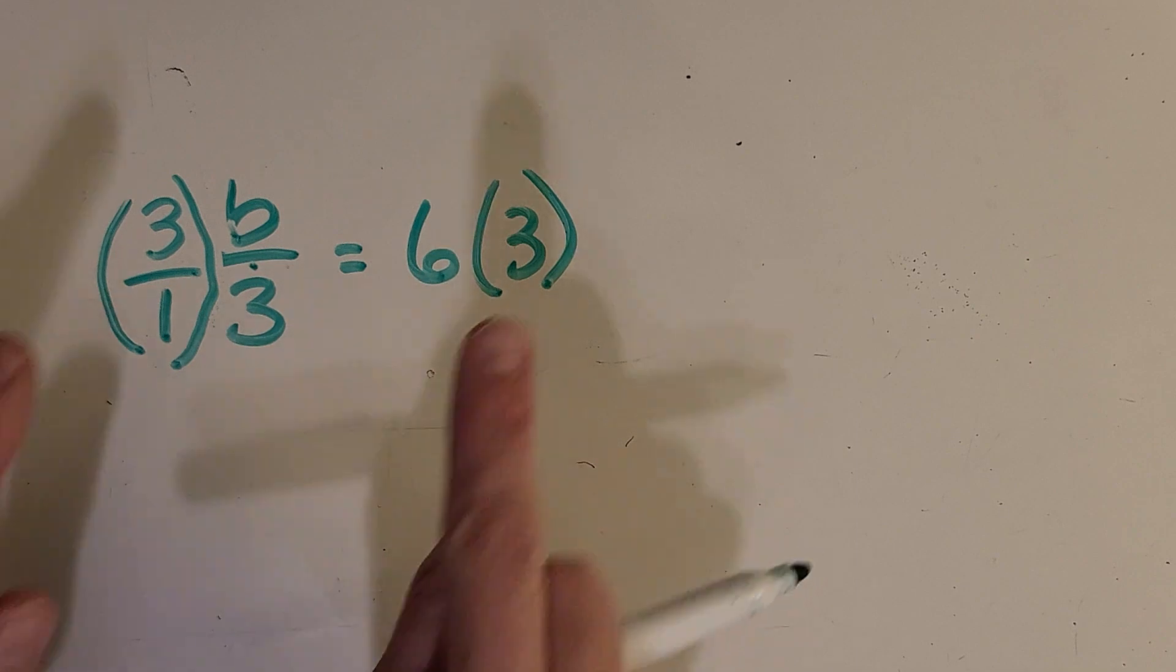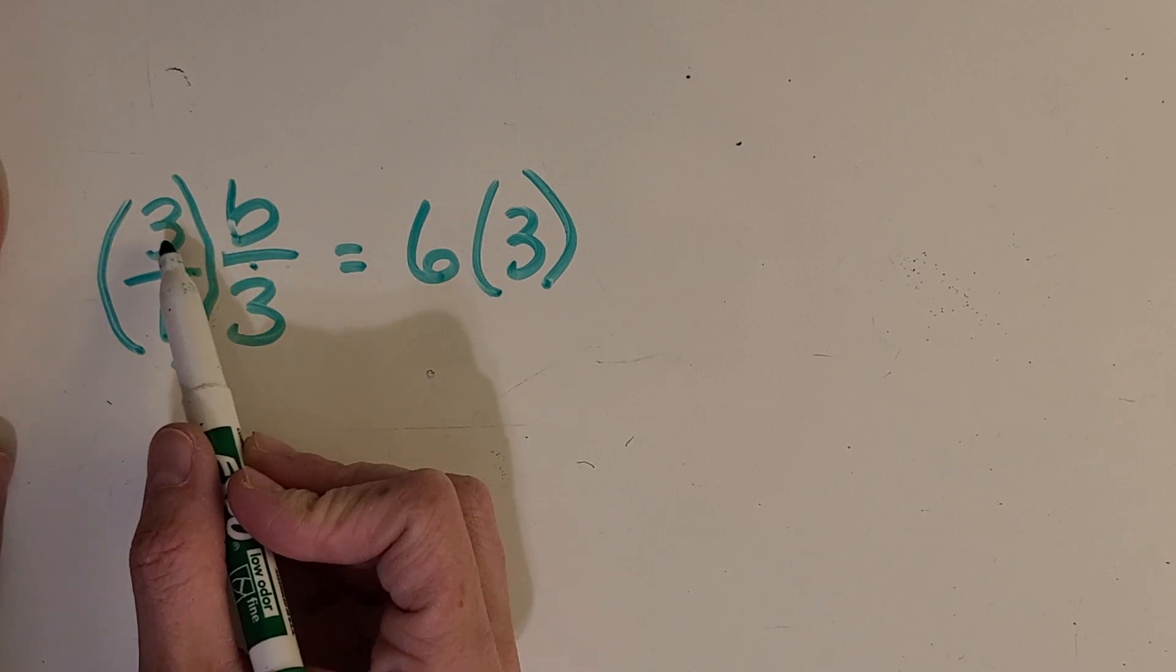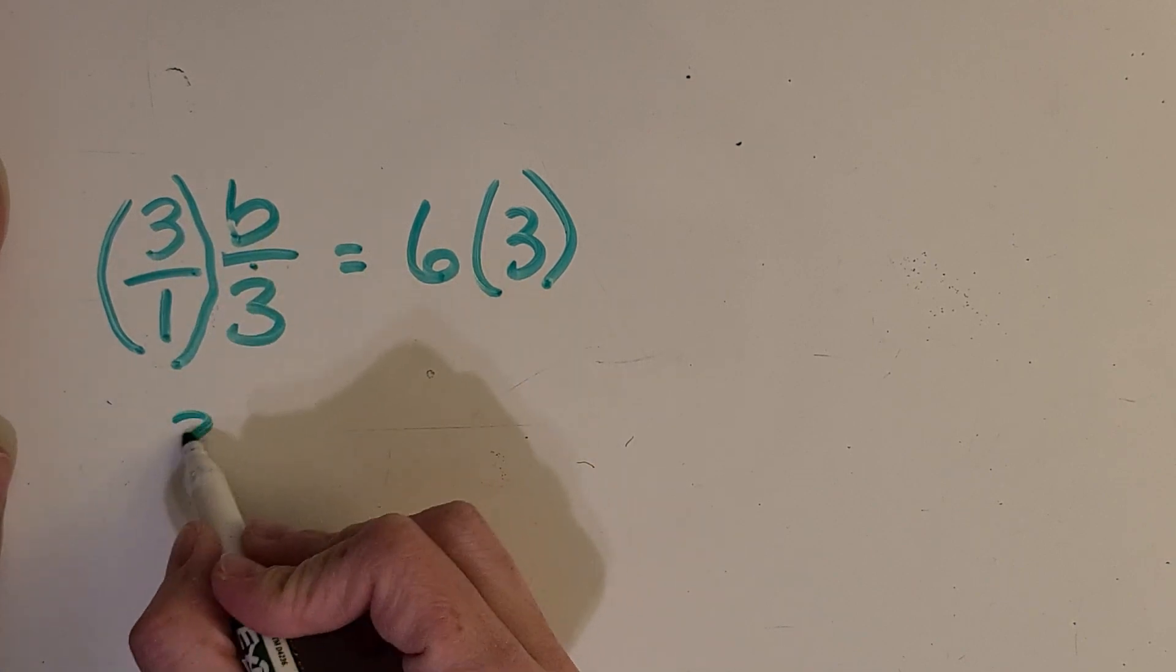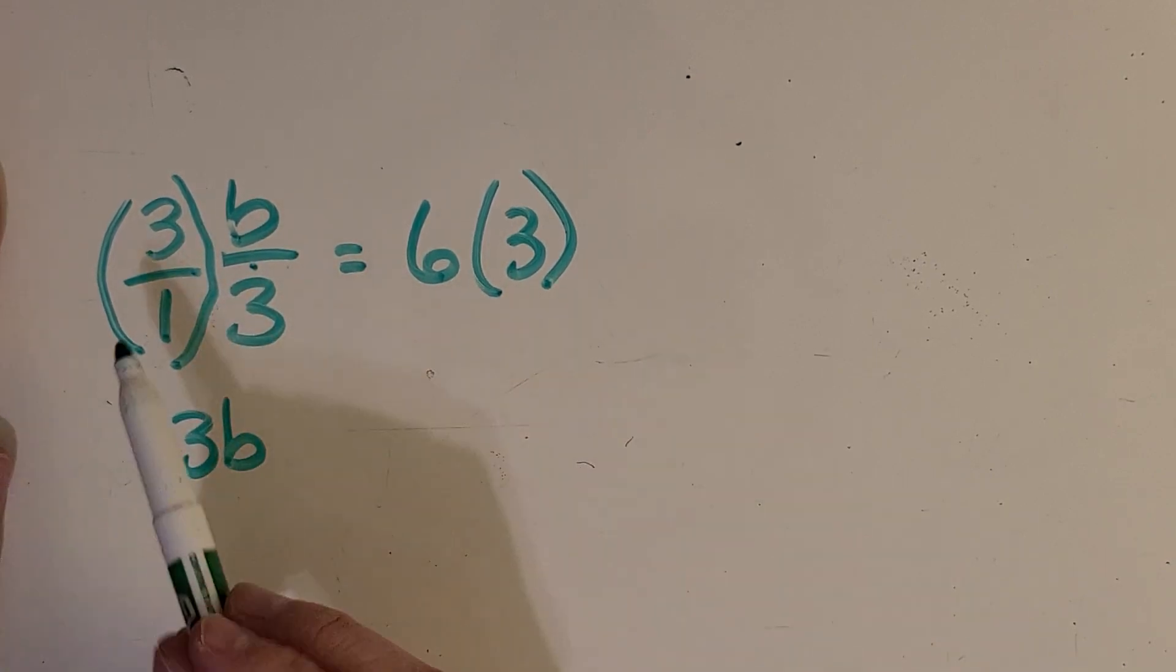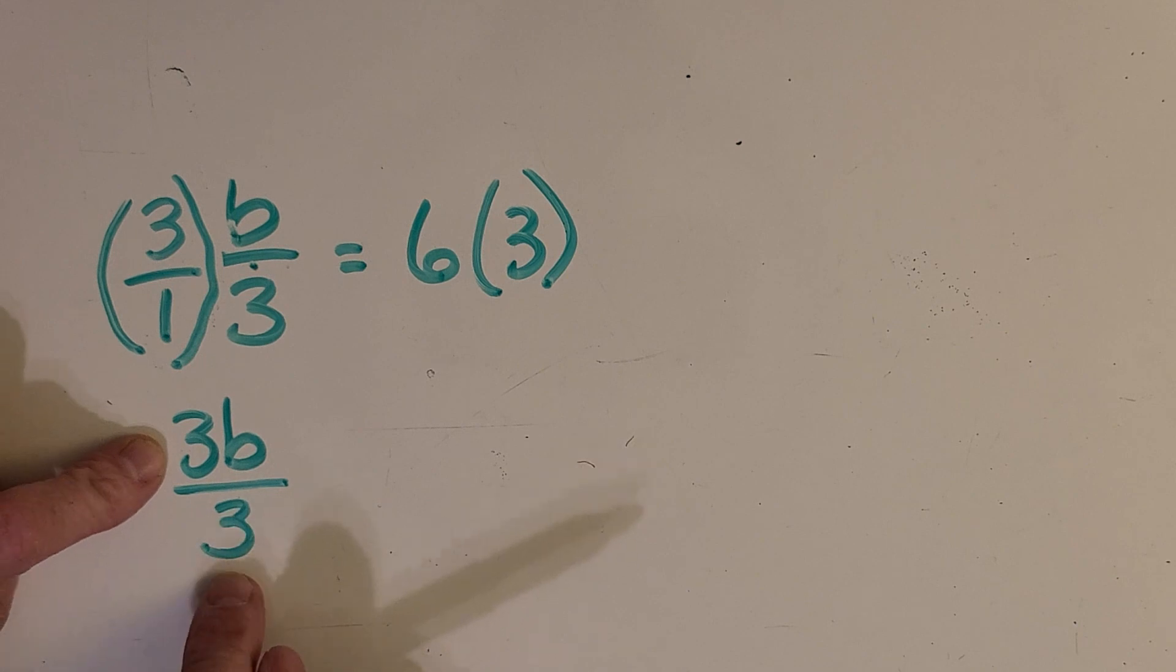So, on this side, we can just write it just like that. And then we're balancing this out, because we're doing the same thing to both sides. And then I'll prove it over here that this works, because we've got 3 times b is 3b. 1 times 3 is 3. You got it. And what is 3 divided by 3?